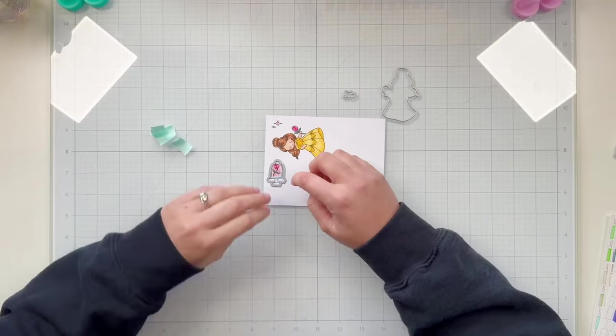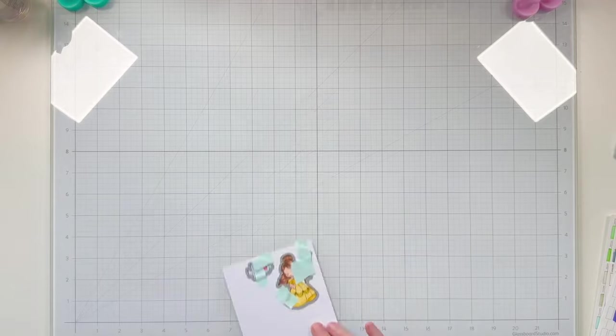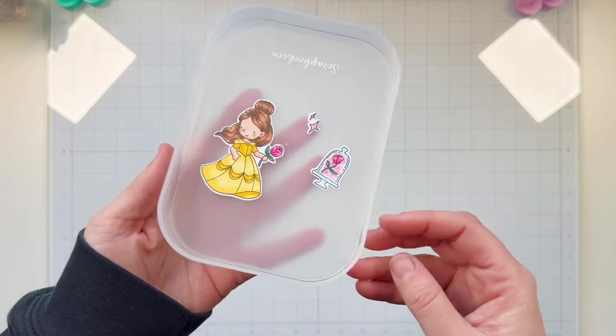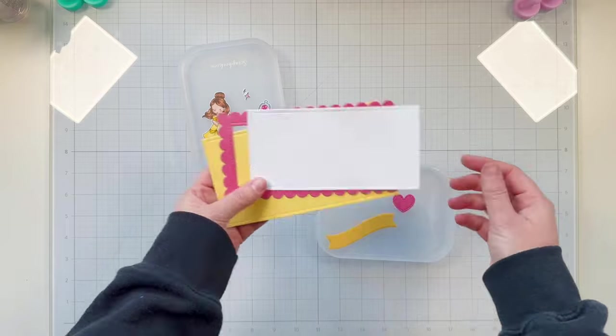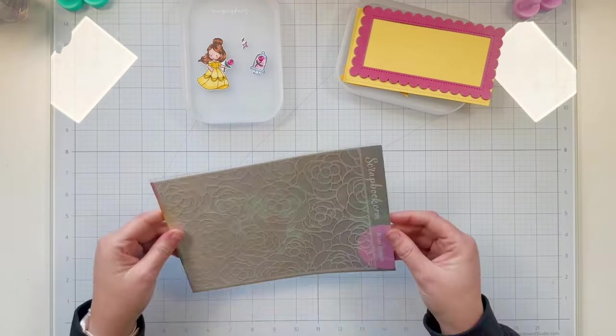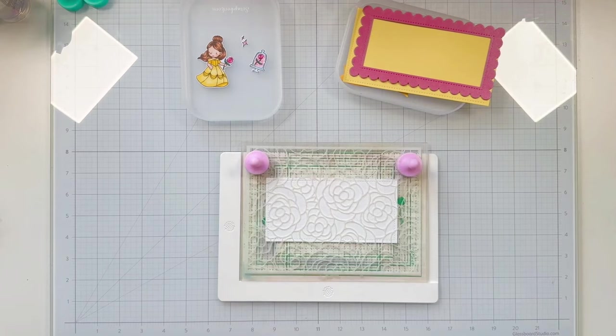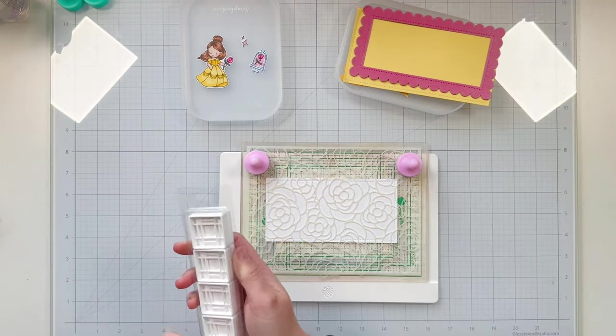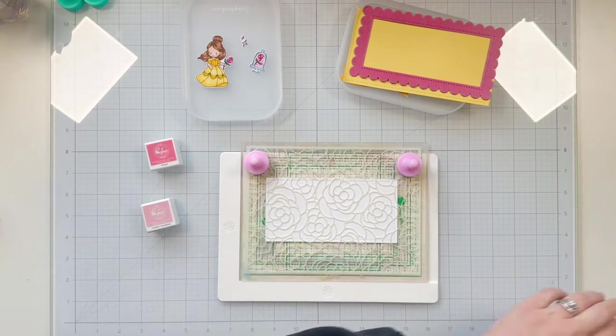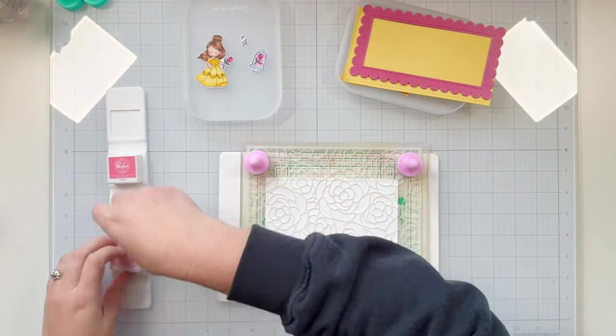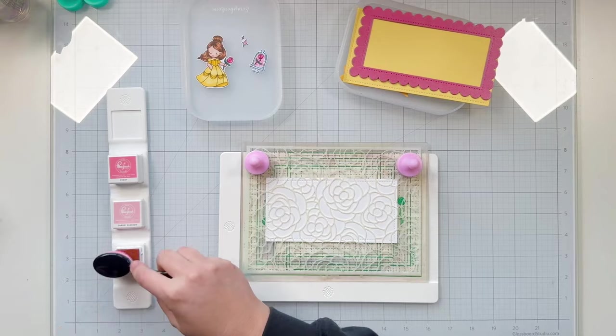I'm going to grab the coordinating dies and use repositionable tape to keep those dies in place while I run it through my die cut machine. If you don't have the dies, you can definitely use a Scan and Cut or fussy cut them out. I also die cut all the different layers for my card. I'm using yellows and pinks to match my princess and the images. For my first layer it's white cardstock, but I wanted to do some stenciling. I'm grabbing the stencil from Scrapbook.com called Rose Bloom—it's a six by eight stencil.